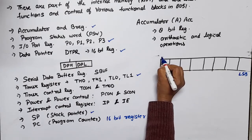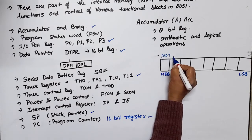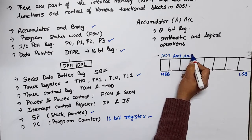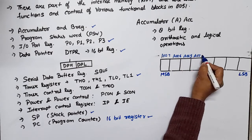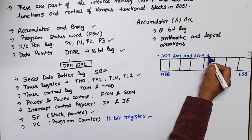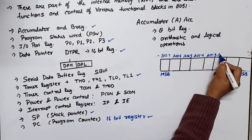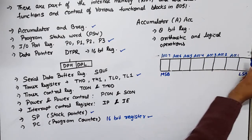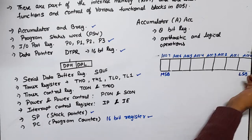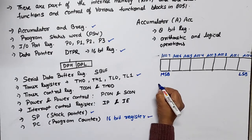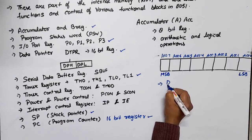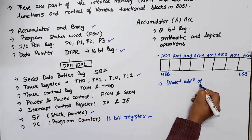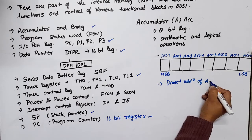For bit numbering of the accumulator: ACC.7, ACC.6, ACC.5, ACC.4, ACC.3, ACC.2, ACC.1, and ACC.0 — this is an 8-bit register. The direct address of the accumulator is E0h. For example, MOV E0h, #25h means that 25h will be loaded into E0 — meaning the accumulator — since E0h is the address of the accumulator.